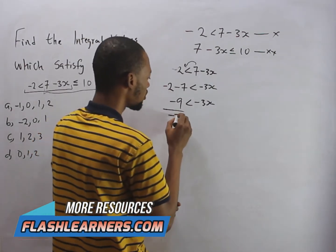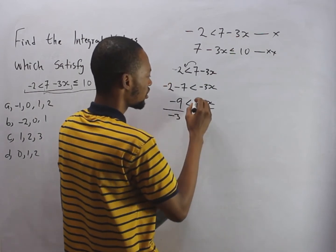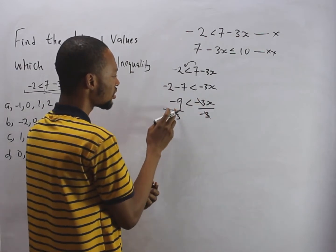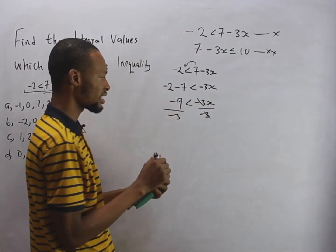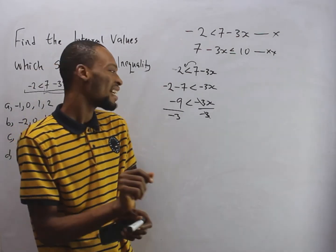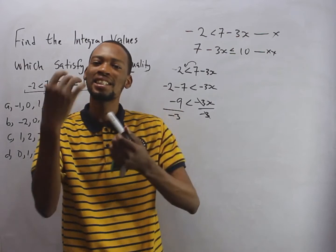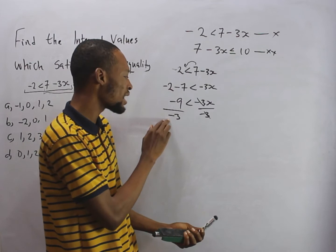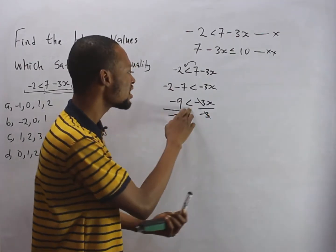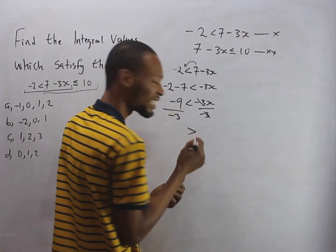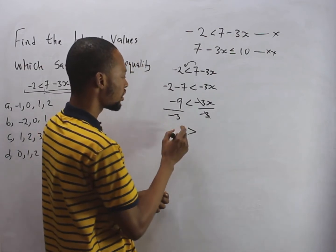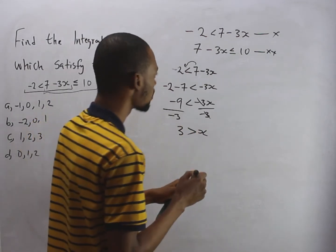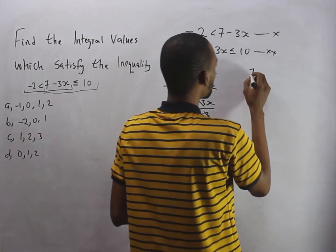We need s, not minus three s, so divide both sides by minus three. Minus three divided by minus three is one, leaving s. Minus nine divided by minus three gives three. In inequalities, when you divide both sides by a negative number, the inequality symbol inverts. So instead of lesser than, it becomes greater than: three is greater than s, meaning s is lesser than three.